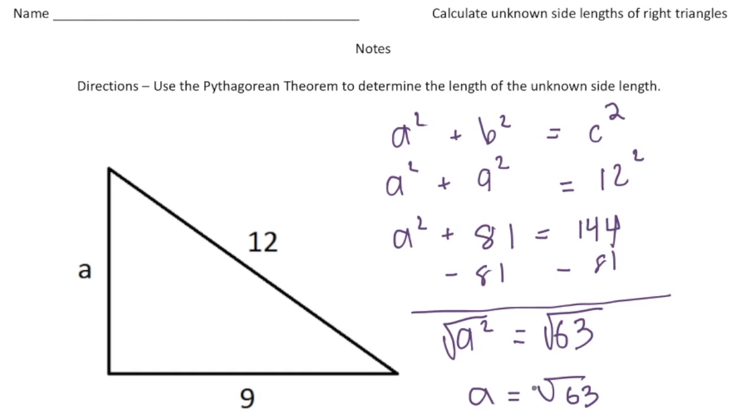Now that's fine for an answer. Maybe you learned before that a square root can have a positive and negative value. But because we're talking about a distance we're only going to use the positive value. Now the square root of 63 happens to be, if I round, 7.94. So we can also say the answer is 7.94 for the distance of side a.